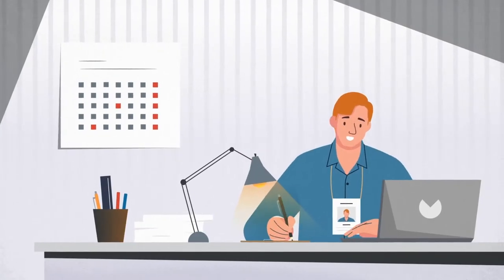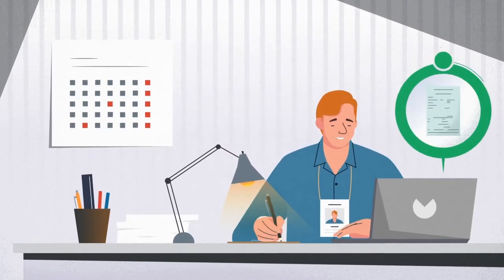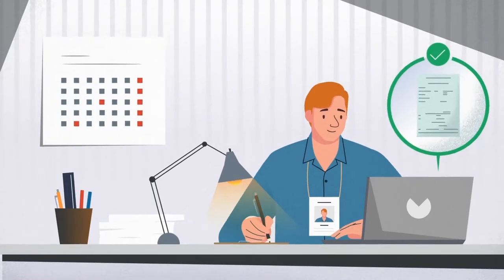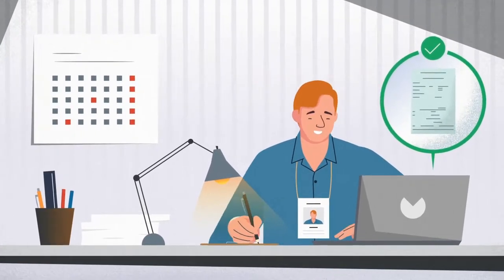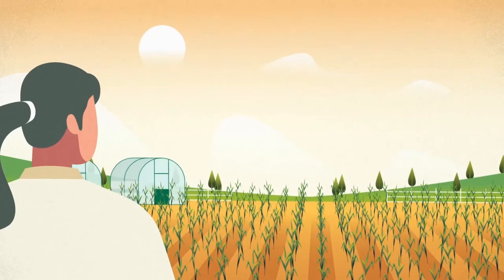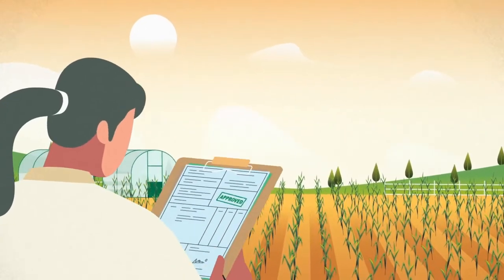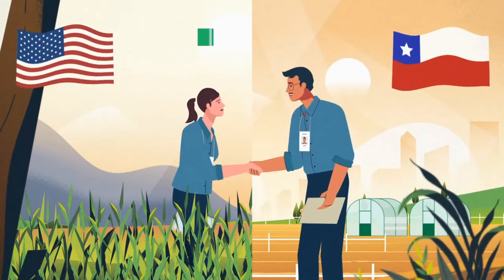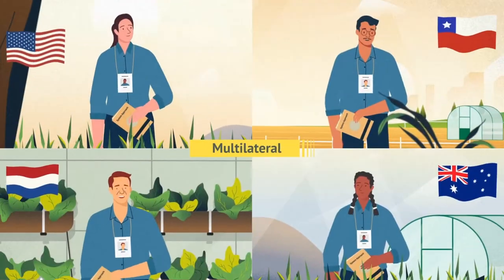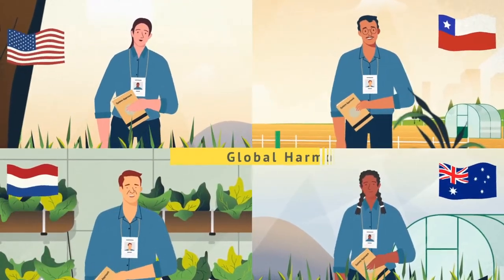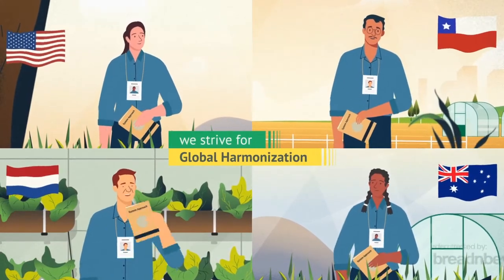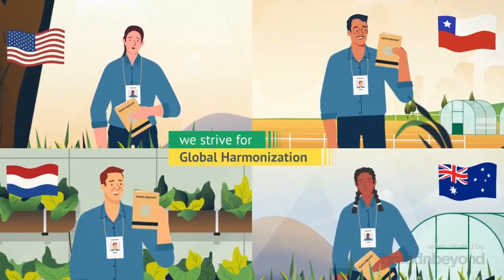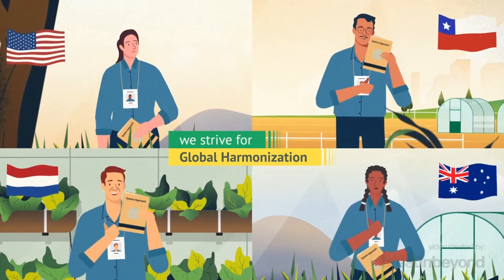Rather than dealing with millions of certification documents under the current consignment-by-consignment system for phytosanitary certification, approved seed companies have the option to certify and move their seeds based on seed production and conditioning practices. Our proposed systems approach represents a transition from a bilateral to a multilateral strategy. We strive for global harmonization through a system that is simple, easy to implement by the NPPOs, yet fulfilling their needs.